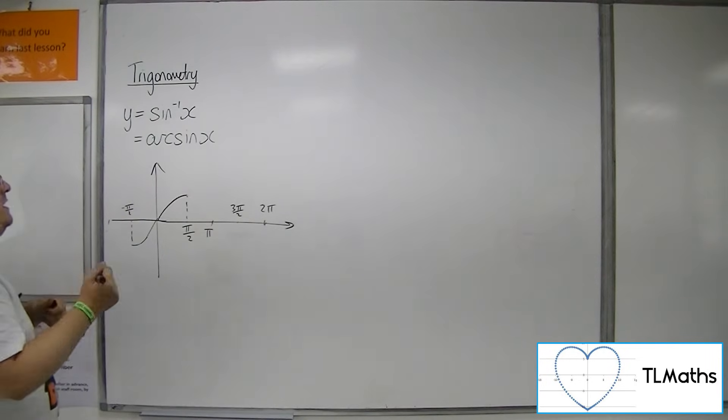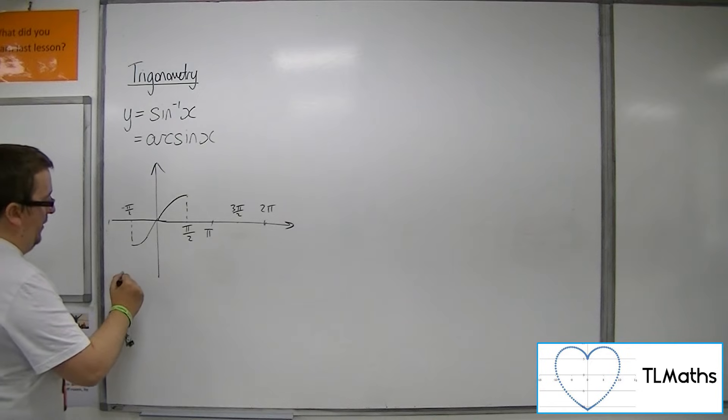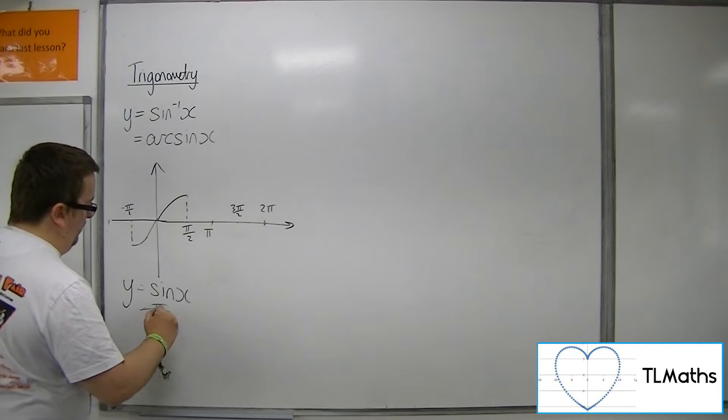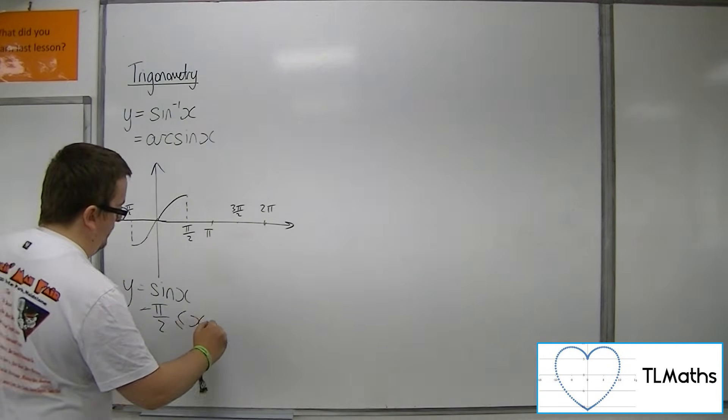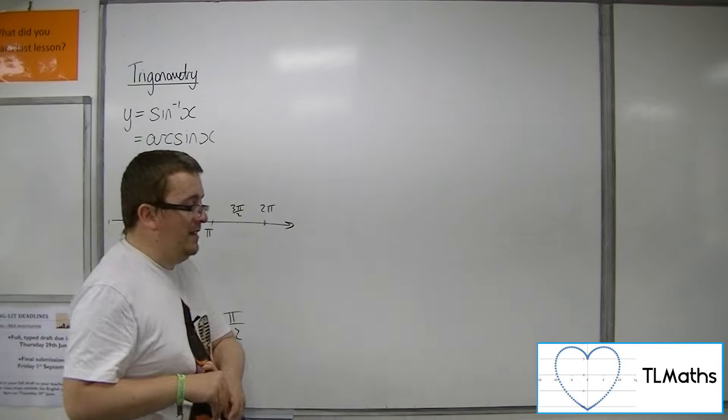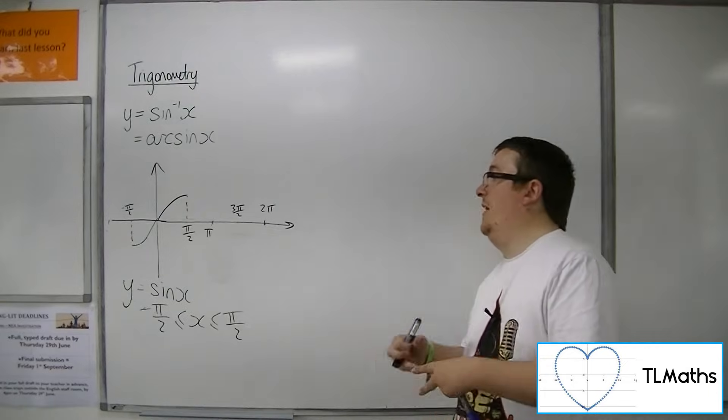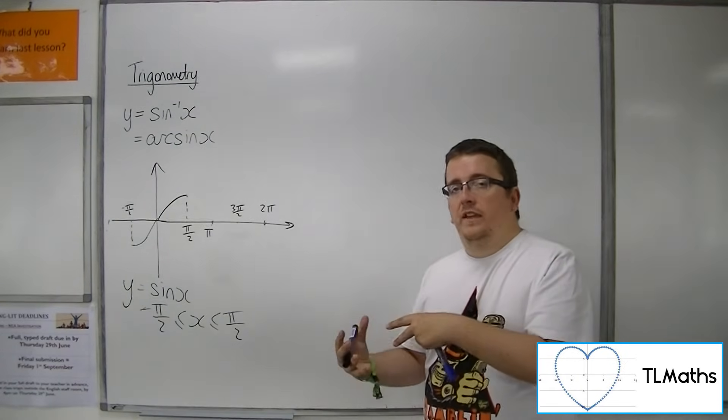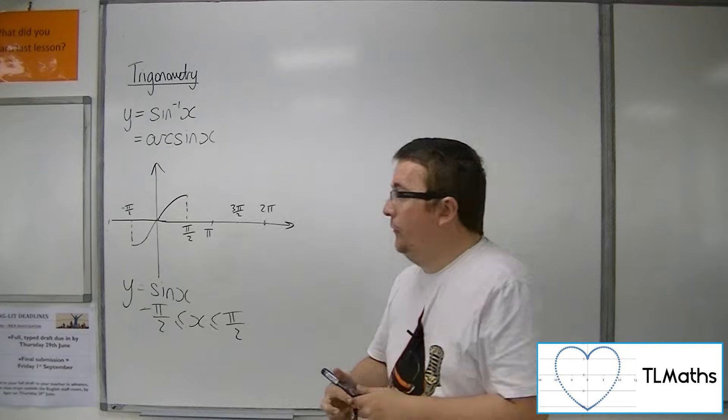So we restrict the domain of sine x from minus pi over 2 to pi over 2. So we restrict it so that now we have a 1 to 1 function, and we can then think about finding the inverse function.